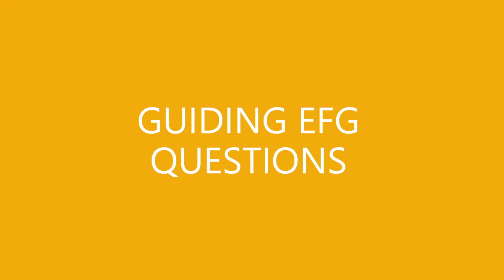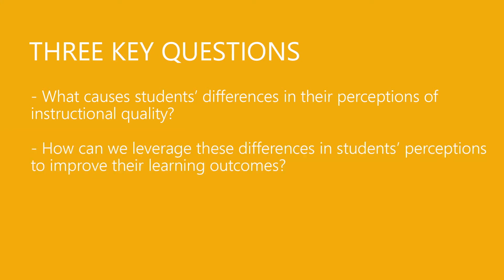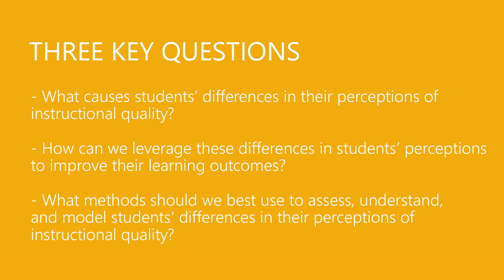There are three overarching questions that we aim to address in our emerging field group. The first one is: what causes students' differences in the perception of instruction quality? The second one is: how can we leverage these differences in students' perceptions to improve their learning outcomes? And finally: what methods should we best use to assess, understand, and model students' differences in the perception of instruction quality?